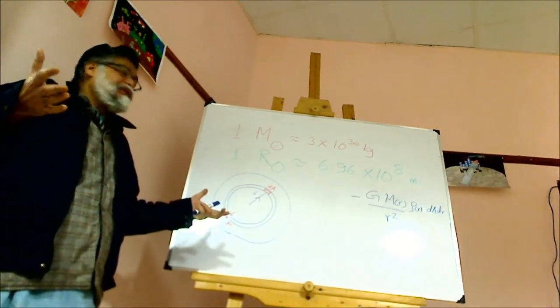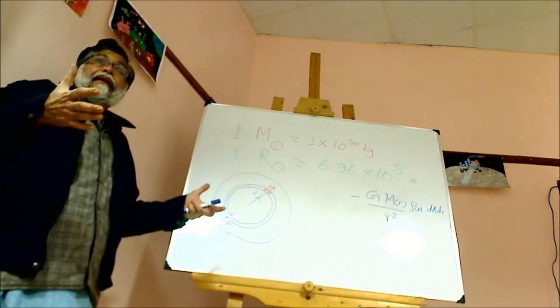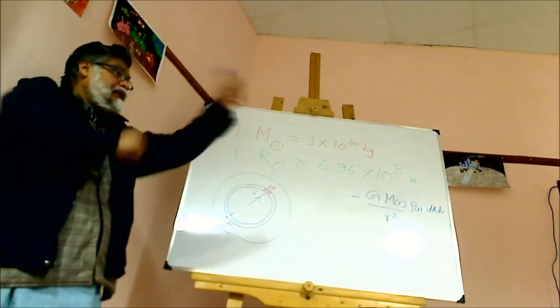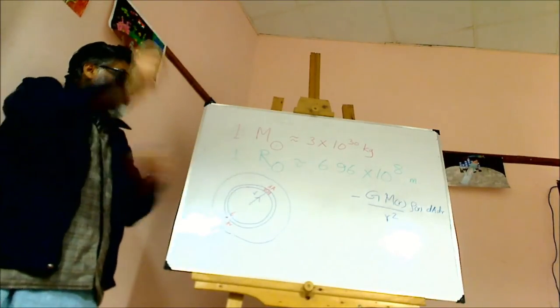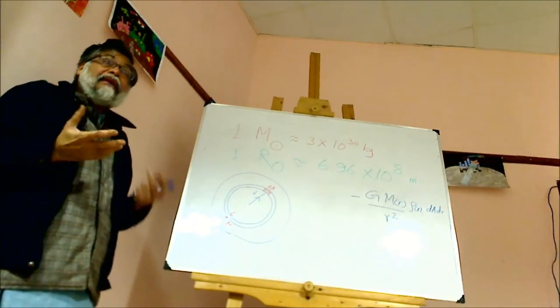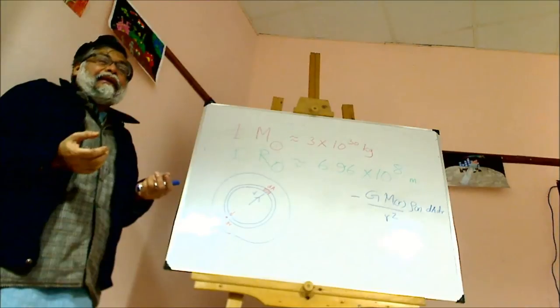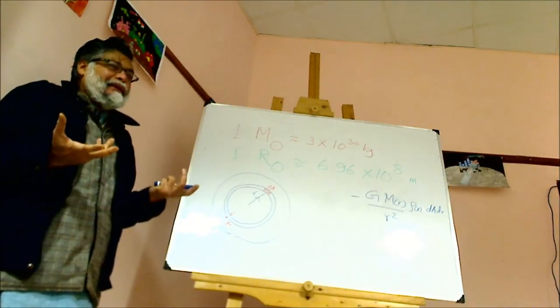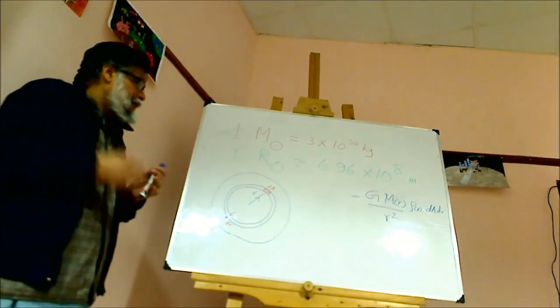If you have gas and it is hot, then there is random motion of the atoms and molecules. Because of that there is pressure, and the pressure gradient can counteract the gravitational attraction. How does it happen?